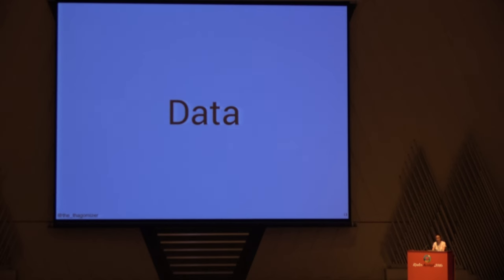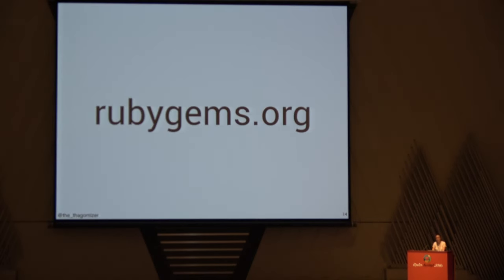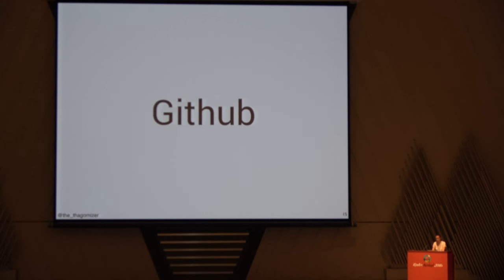I used two data sources: the rubygems.org download data. If you go to rubygems.org, there's a tiny data link in the bottom left where you can see the data that's available. And one of my coworkers got us a very large data dump from GitHub of all the public repositories on GitHub, and I also used that data to answer some of these questions.